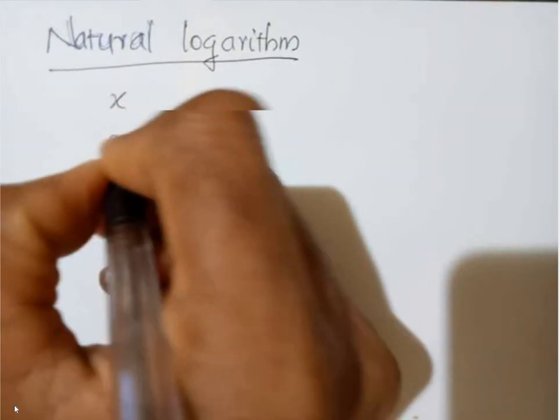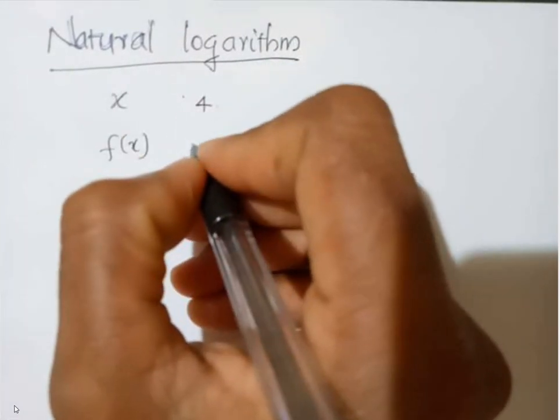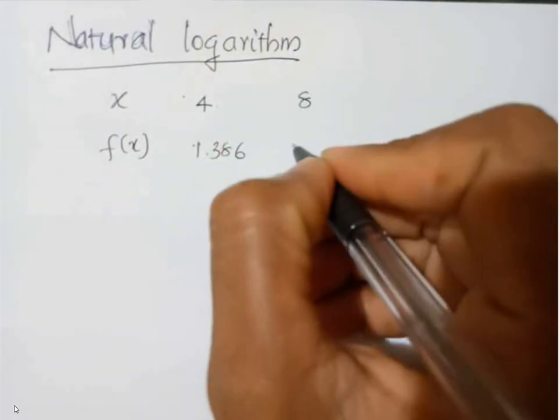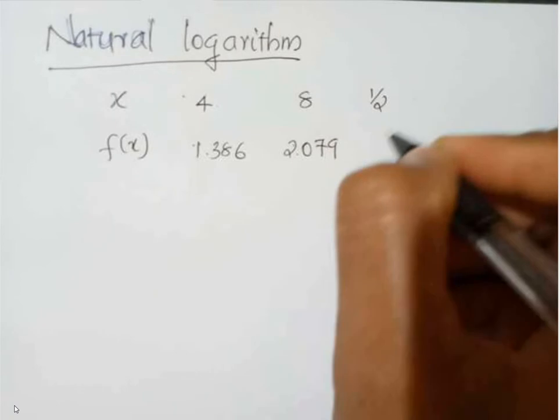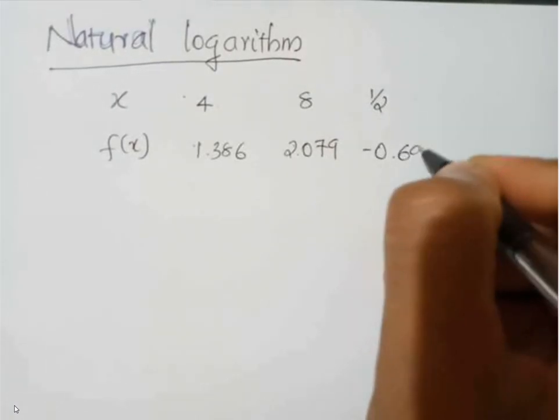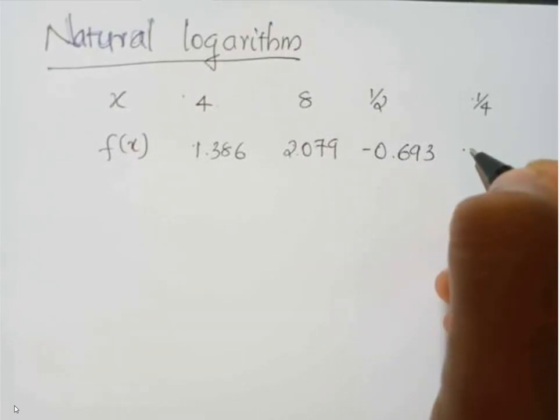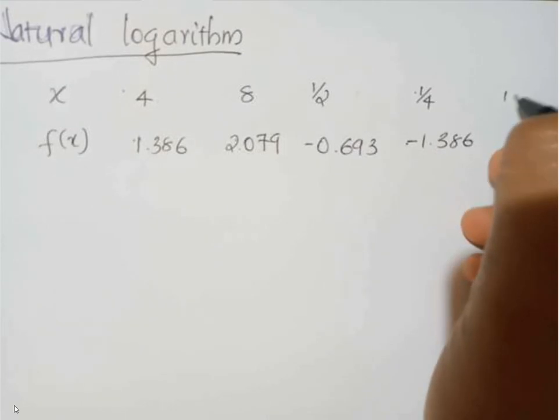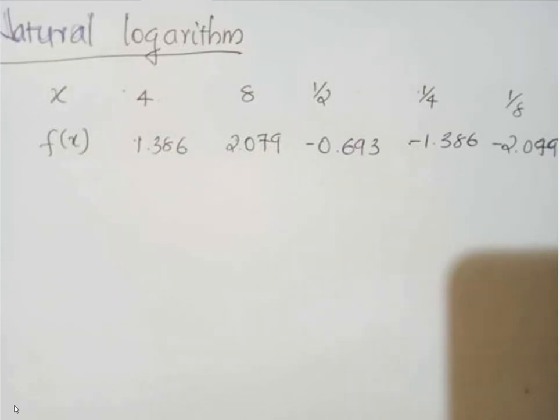I am just substituting the values for drawing the graph of natural logarithm. Natural logarithm 4 is equal to 1.386. At the point 8, the value is 2.079. At the point 1 by 2, this is minus 0.693. At the point 1 by 4, it is minus 1.386 and 1 by 8 minus 2.0979. Okay? So, actually this is the value of the natural logarithm.